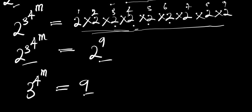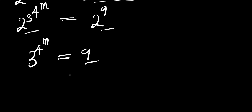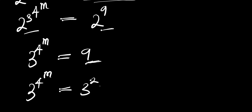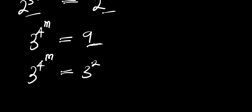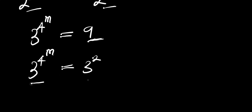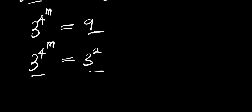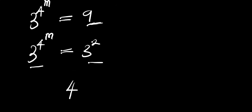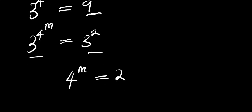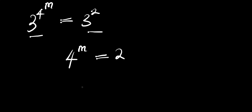Now 9 here is a perfect square, so we can rewrite 9 as a product of multiples of 3, that is 3 to the power of 2. Going by the same identity — when the bases are the same, you compare the exponents — that means we are now going to have 4 to the power of m equals 2.